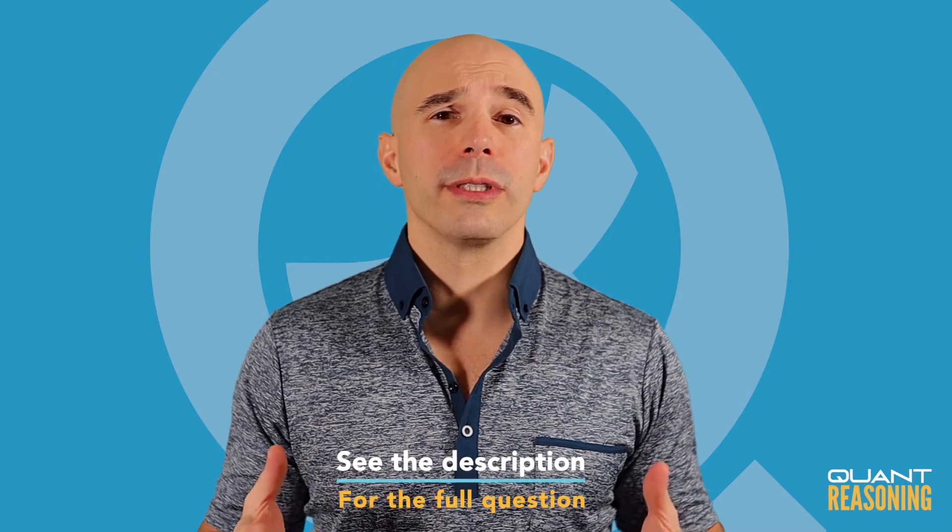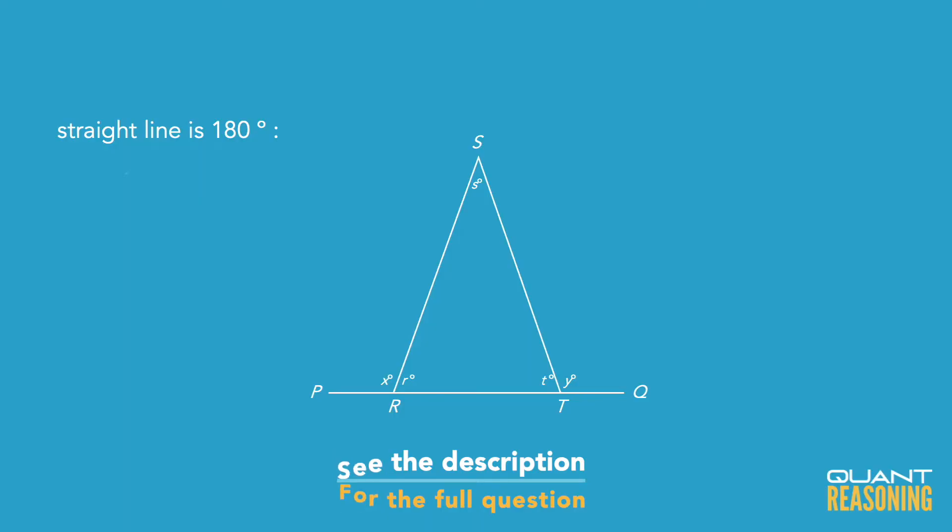And I think the thing we need to know to solve this question is that on a straight line, the sum of the angles will be 180 degrees. So the value of X will be 180 minus R and the value of Y will be 180 minus T.